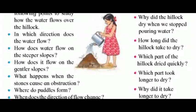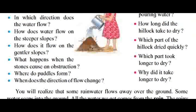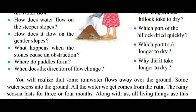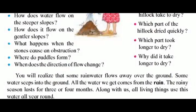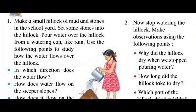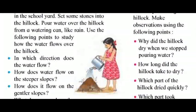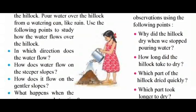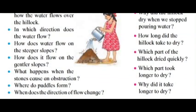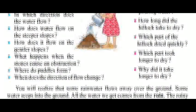How does water flow on the steeper slopes? How does it flow on the gentler slopes? What happens when the stones cause an obstruction? Where do puddles form? When does the direction of flow change? Now stop watering the hillock and make observations: why did the hillock dry when we stopped pouring water? How long did the hillock take to dry? Which part dried quickly and which part took longer?